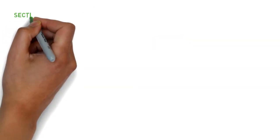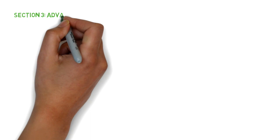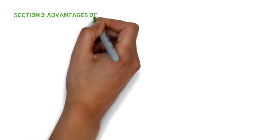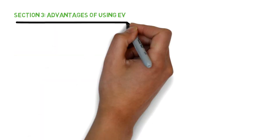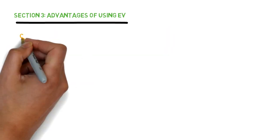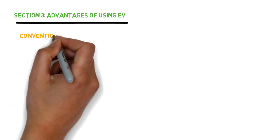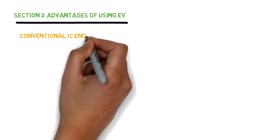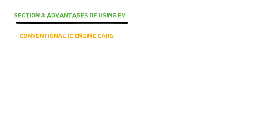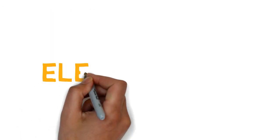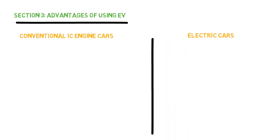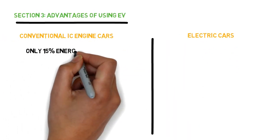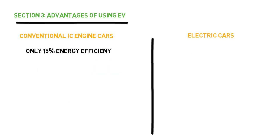Section 3: What are the main benefits of using electric cars? Electric cars are extremely efficient. Compared to conventional IC engine cars, where less than 15% of the energy in the fuel translates into physical movement, in an electric car up to 90% of the energy in the batteries can be converted into movement. This means that electric cars can be 6 times more efficient and in most cases are also 3 to 4 times cheaper to run.